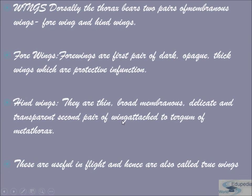The thorax bears two pairs of wings: forewing and hindwing. The forewings are the first pair — dark, opaque, thick wings that are protective in function. The hindwings, unlike forewings, are thin, broad, membranous, delicate, and transparent — the second pair of wings attached to the tergum of the metathorax and used in flight. That is why hind wings are called true wings.